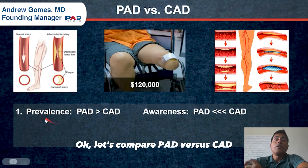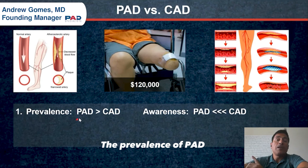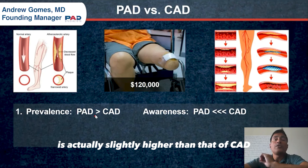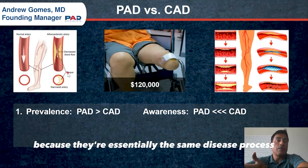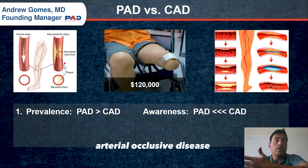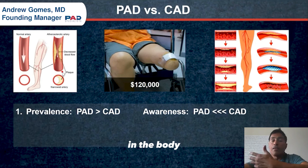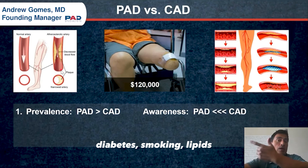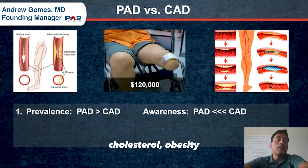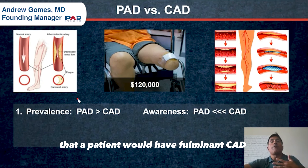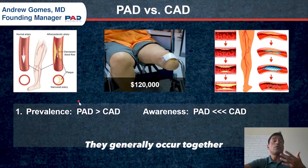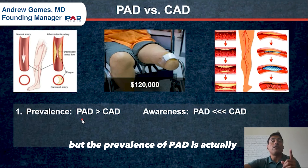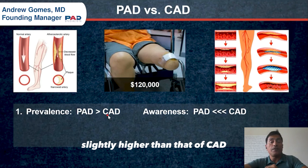The prevalence of PAD — a lot of people don't know this — is actually slightly higher than that of CAD. It makes sense that they'd be similar because they're essentially the same disease process: arterial occlusive disease in the body, driven by the same risk factors — diabetes, smoking, lipids, cholesterol, obesity. It's very rare that a patient would have significant CAD and pristinely clean leg arteries, or vice versa. They generally occur together.